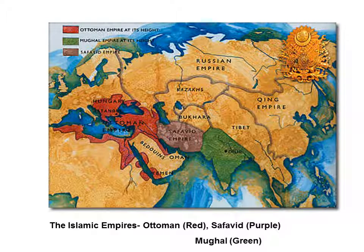Hi everyone, this is Phil Travis and this presentation involves a discussion of the three Islamic empires that rose to dominance in their respective regions at the same time in which we in class have been watching Europe come out of the Middle Ages into the Renaissance into the Enlightenment period.